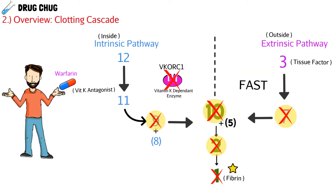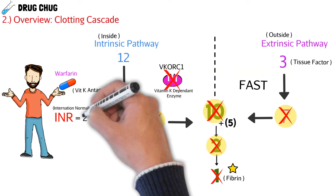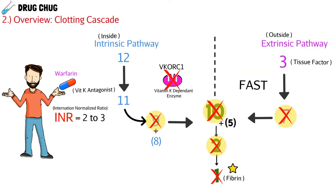As a patient has less and less fibrin, they're going to clot less and less — another way of saying that is they're more prone to bleeding, because they have fewer clotting factors. We need a way to monitor this, and luckily we have one. Any patient on warfarin will have their INR checked — the International Normalized Ratio. In a healthy patient the INR is typically 1 or very close to 1, and when a patient is taking warfarin we have a target INR of 2 to 3.